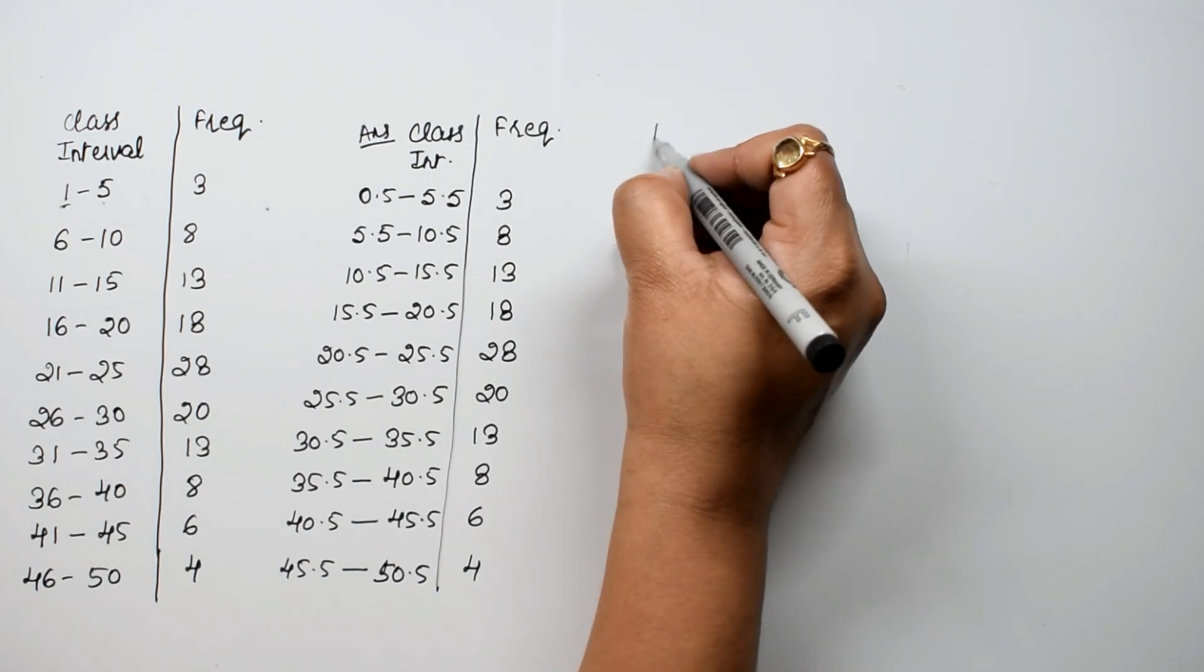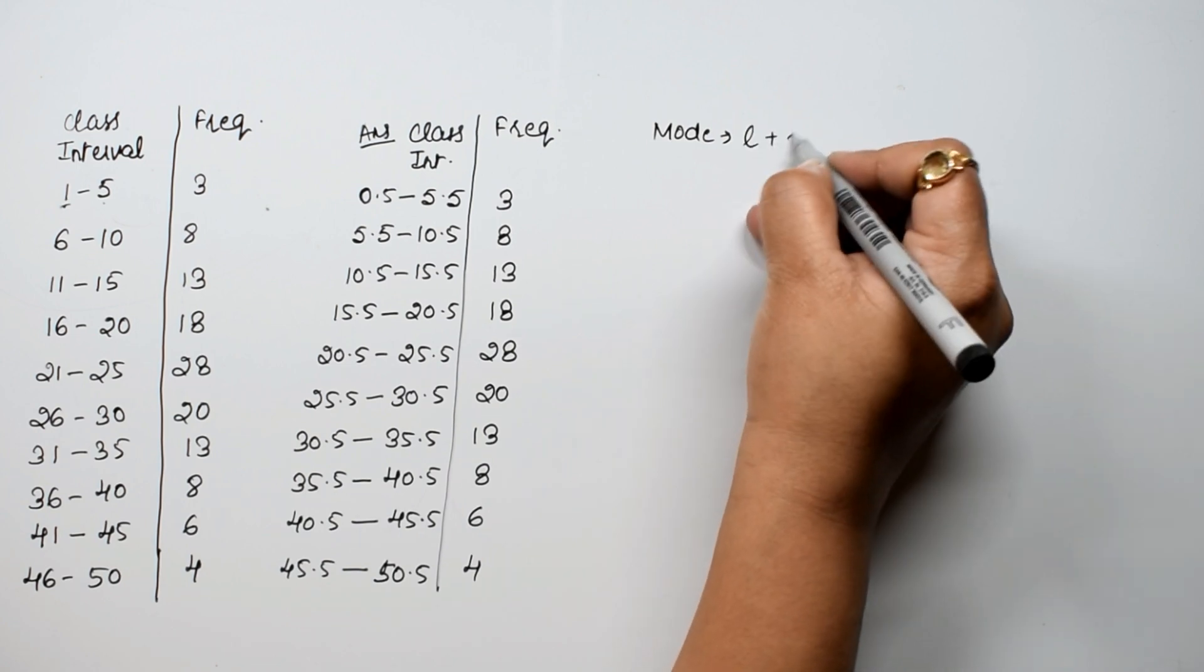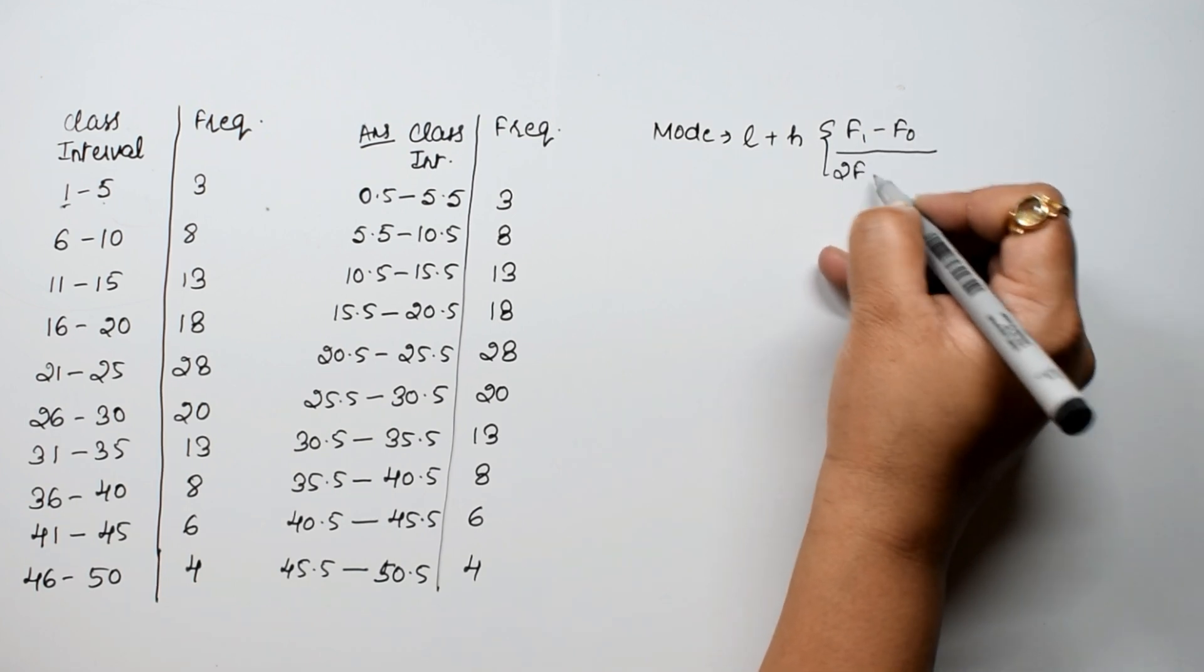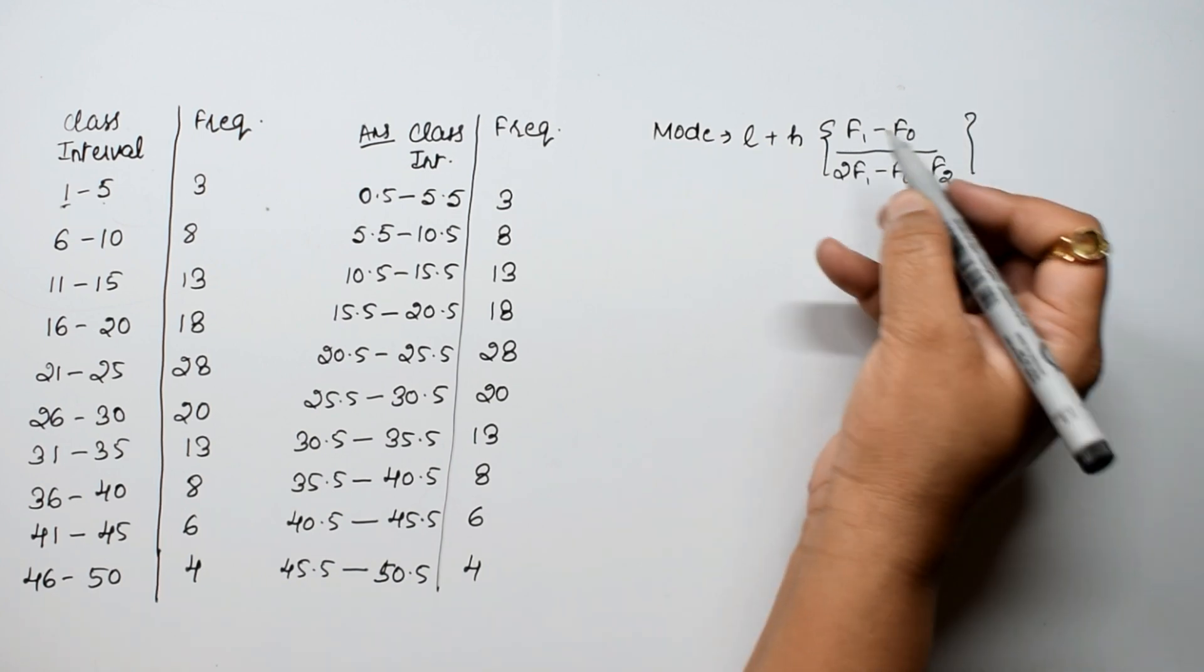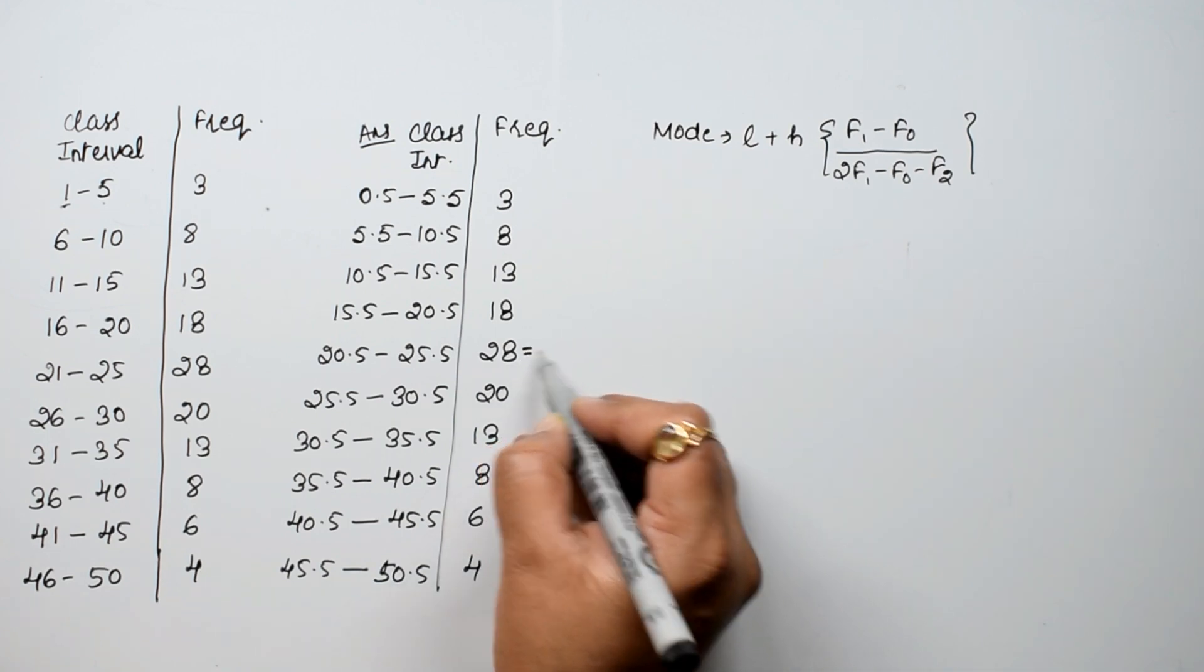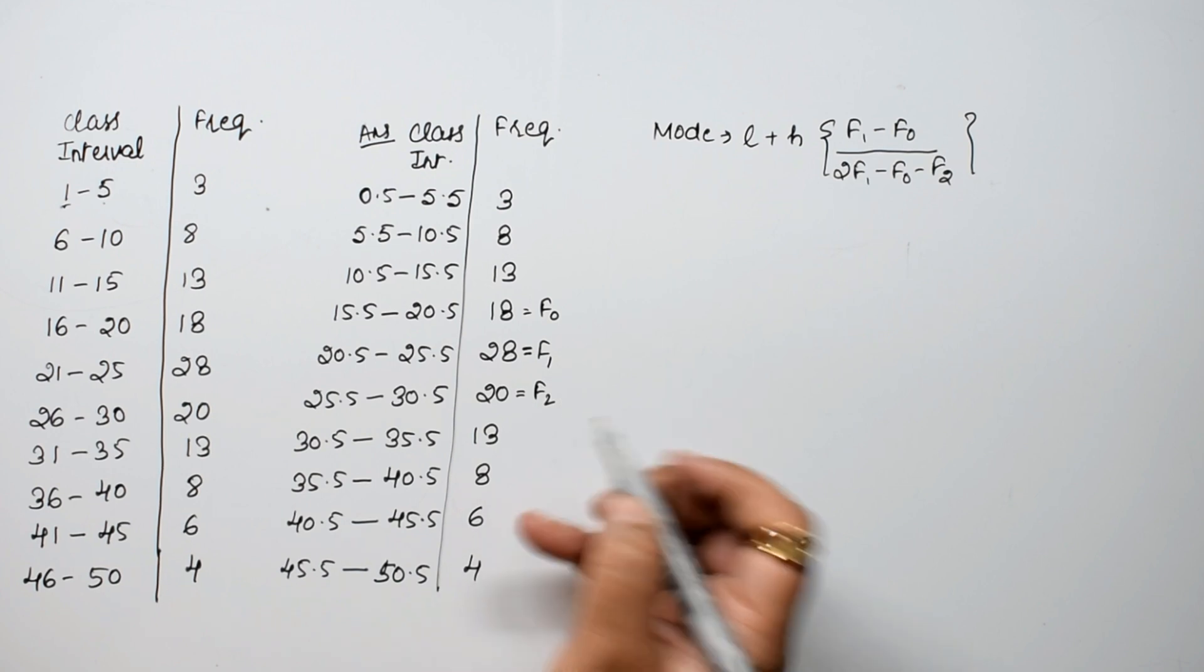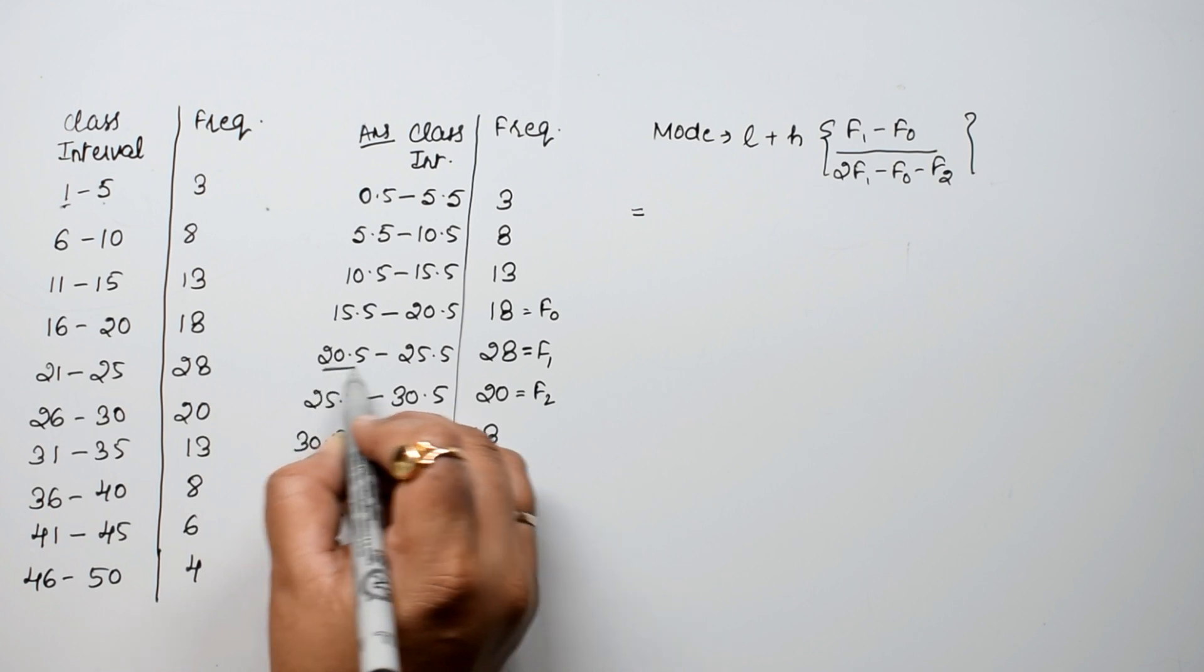Now the mode formula is l plus h into f1 minus f0 upon twice of f1 minus f0 minus f2. Our f1 is the highest repeated value which is 28. The value above it is f0 which is 18, and after it is f2 which is 20. The lowest limit of f1 is 20.5.